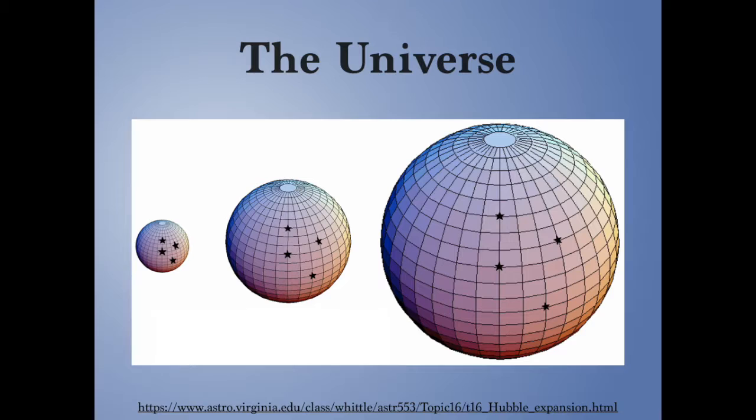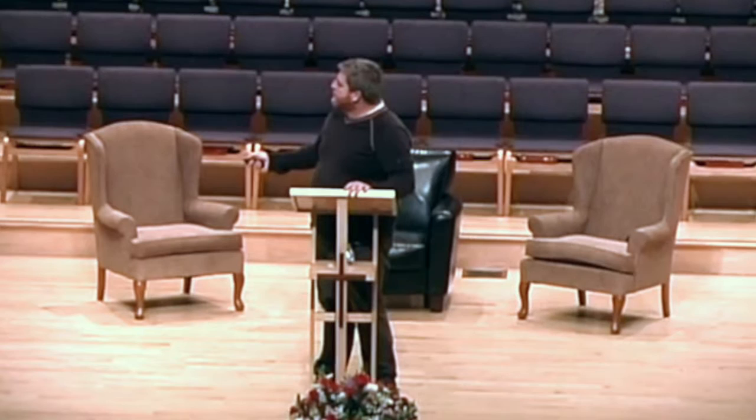Finally, the universe as a whole is not in an equilibrium state — it's expanding. Everywhere we look in the night sky, galaxies are moving away from us in a way that suggests everything is moving away from everything else. Think of the surface of a balloon as it blows up — if you're twice as far away, you're moving twice as fast. That's the first part of the talk done.